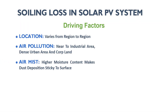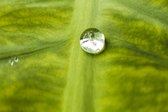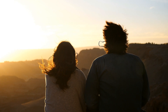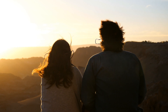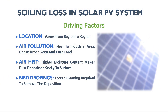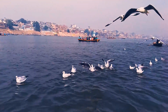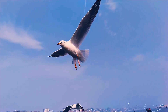Air mist also plays the role of catalyst in soiling. If the moisture content in the air is high, it makes the dust deposition on the PV surface sticky, so even with a blow of heavy wind the dust remains stuck to the surface. Bird droppings represent a serious problem as they are usually not removed by rain events, but their impact is reported as relatively small — less than two percent of total soiling loss.